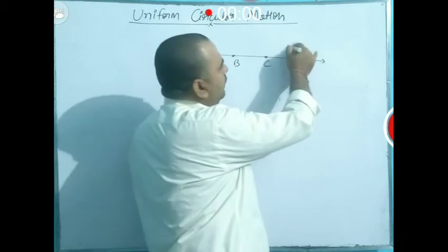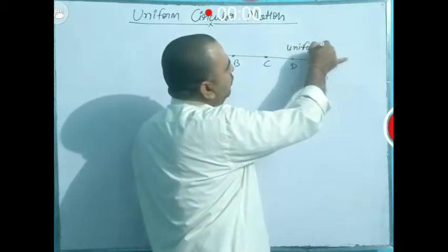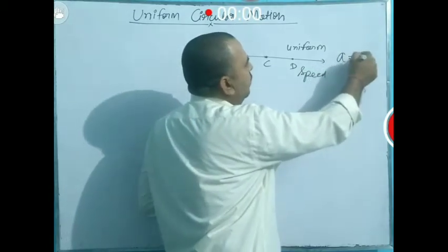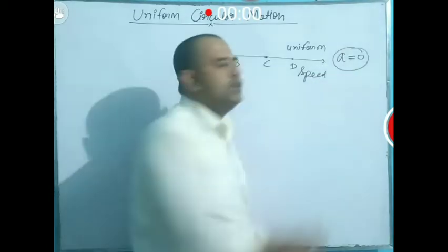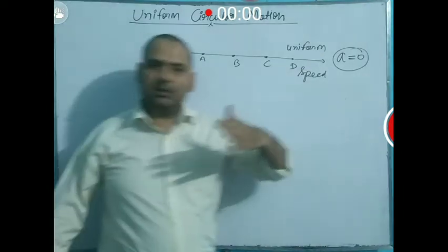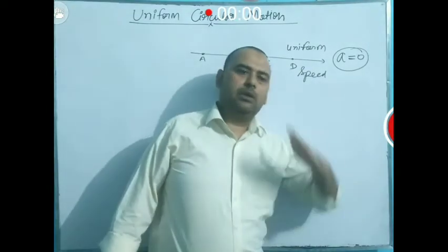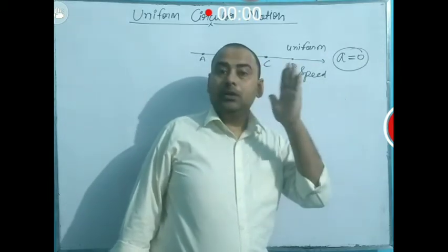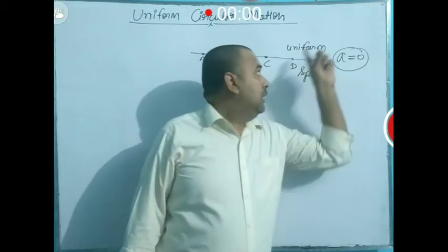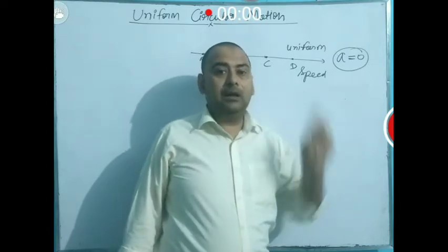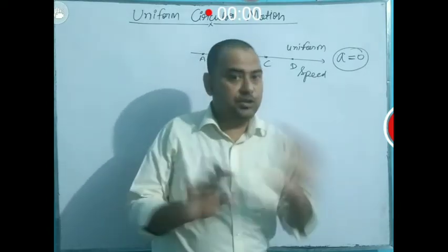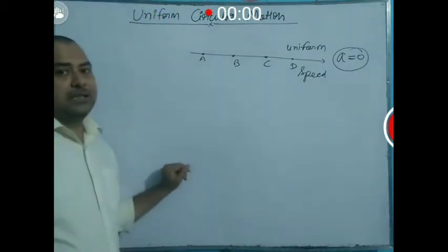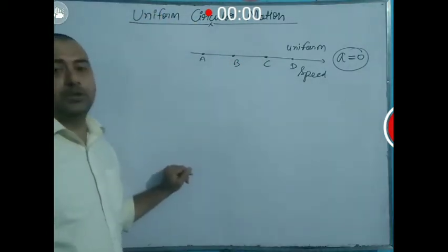For uniform speed, the acceleration of the body is zero. Because the speed is not changing, the body is not accelerated. When the body moves at uniform speed, its acceleration is zero. Now we will discuss uniform circular motion.